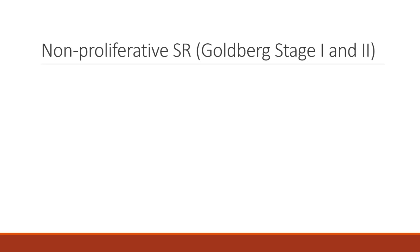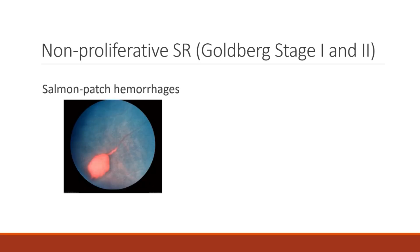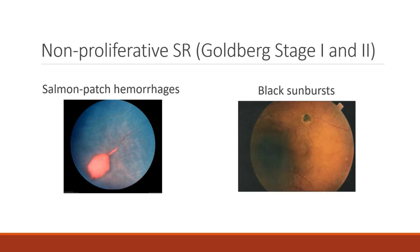Non-proliferative sickle cell retinopathy includes the first two Goldberg stages, defined by peripheral arteriolar occlusions leading to peripheral non-perfusion and subsequent arterial venous anastomosis from pre-existing capillary channels. These changes affect the peripheral retina and therefore are not associated with vision loss. Some findings associated with these changes are salmon patches and black sunbursts. Salmon patches are areas of intraretinal hemorrhage from superficial blood vessels following a peripheral retinal arterial occlusion, salmon in color due to hemolysis. Black sunbursts are a sequela of salmon patches caused by migration and proliferation of the retinal pigment epithelium. You might also see refractile spots, which are old reabsorbed hemorrhages with hemosiderin deposition within the inner retina just beneath the internal limiting membrane.